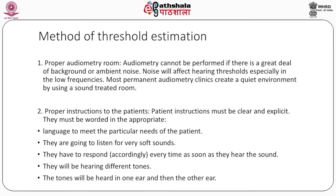Now we are going into the method of threshold estimation. First, to record threshold estimation, we need an auditory room. Audiometry cannot be performed if there is a great deal of background or ambient noise. Noise will affect hearing threshold, especially in the low frequencies. To reduce the effects of background noise, we need to find a very quiet spot or create a quiet environment. Most permanent audiometry clinics create a quiet environment by using a sound-treated room.